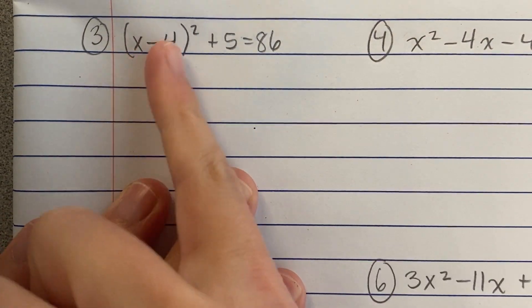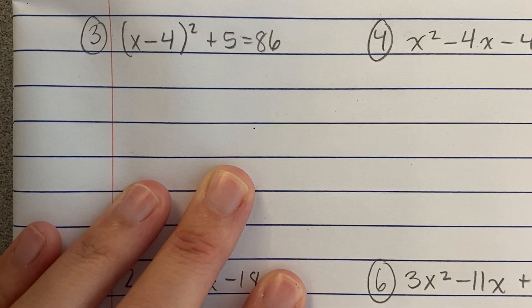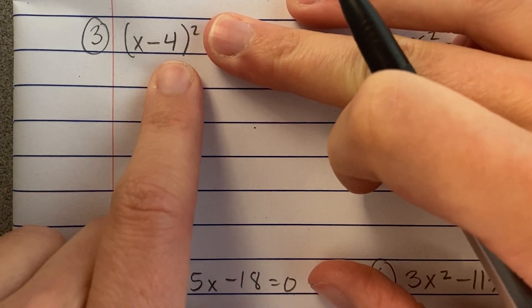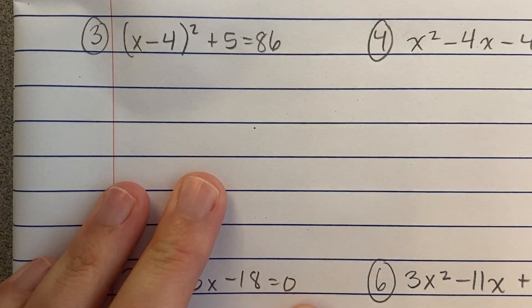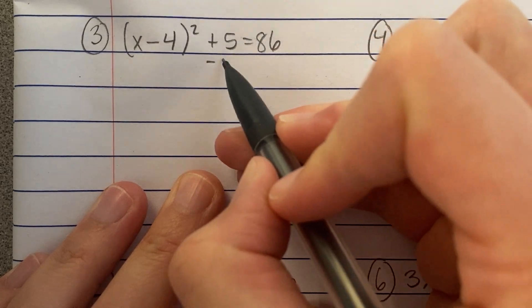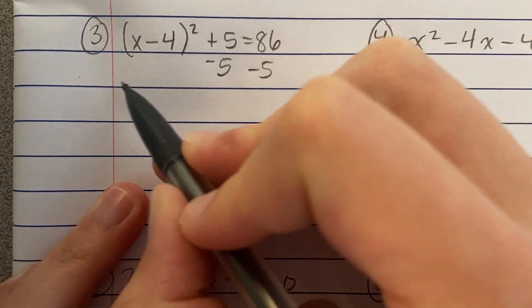Here, I notice that there's something being squared, and I'm thinking to myself, ooh, if I had this by itself, I could square root it and get rid of that squared. So, let's get that by itself on one side of the equal sign here. So, I'm going to subtract 5 first.